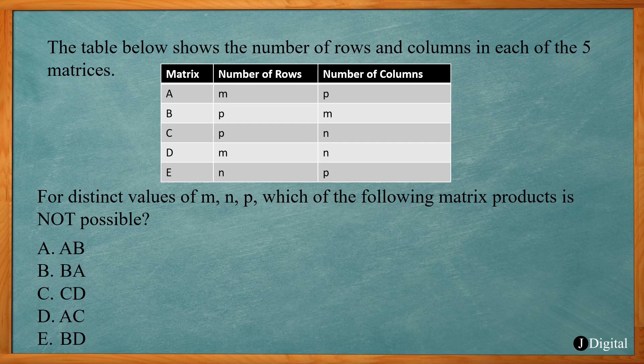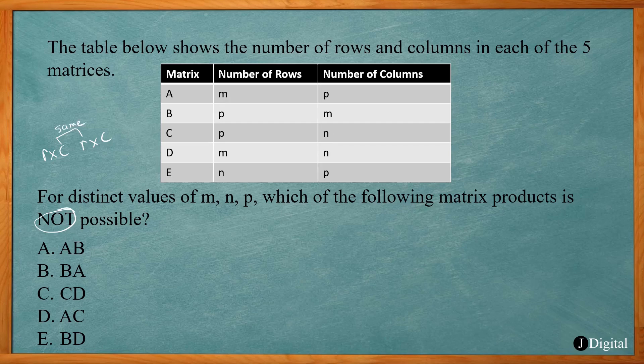This problem shows the number of rows and columns of five matrices A, B, C, D, and E, with distinct values M, N, and P. Which matrix product is not possible? In order to multiply two matrices, the columns of the first matrix must match the rows of the second matrix — those two middle numbers have to be the same value.